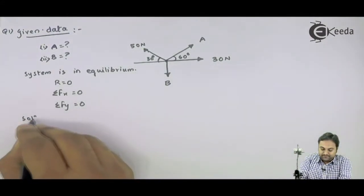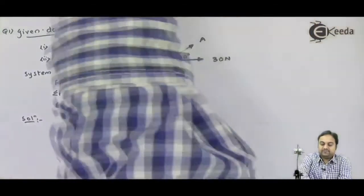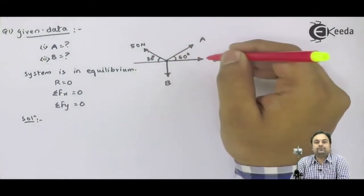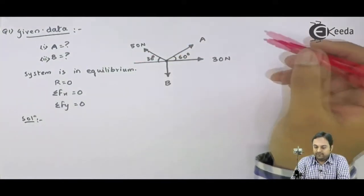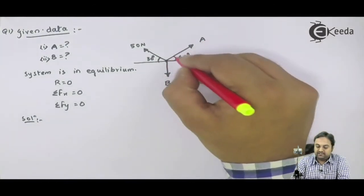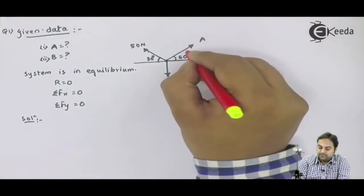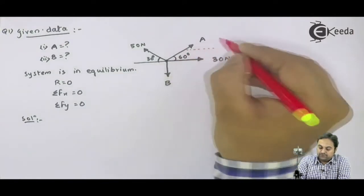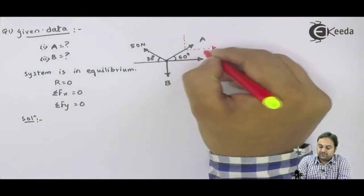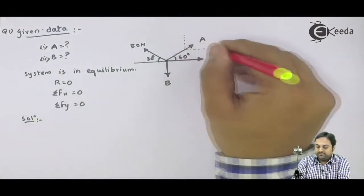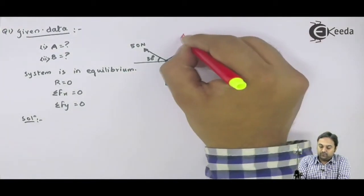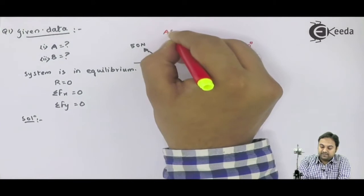Since we know that if we have any inclined force, that force needs to be resolved. Here if we look in this diagram, the force capital A is inclined at 60 degree with horizontal. So I will have two components of A. The component which is horizontal will be A cos 60 degree and vertical will be A sin 60 degree.